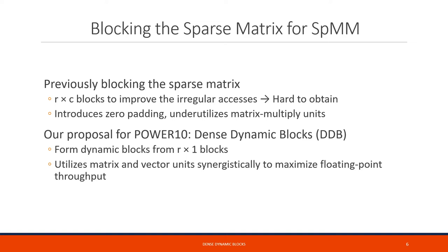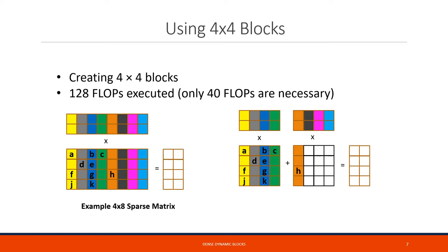Our DDB method forms dynamically sized blocks from R by 1 blocks to utilize the MMA units more efficiently. Additionally, DDB can detect inefficient execution points and switch to utilizing vector units if needed. To illustrate, consider trying to create 4x4 blocks from an example 4x8 sparse matrix with non-zero elements marked with different letters. Using 4x4 blocks yields two separate blocks but introduces a lot of zero padding — many 4x1 columns are completely zero. Such an approach needs to execute 128 floating point operations when only 40 are needed.